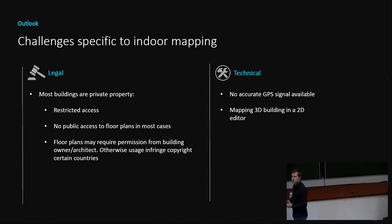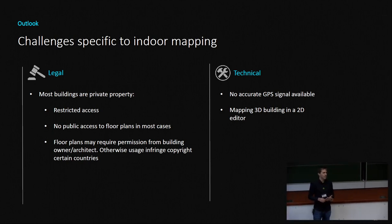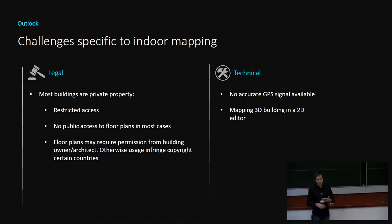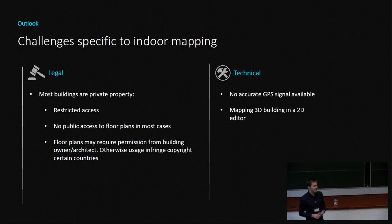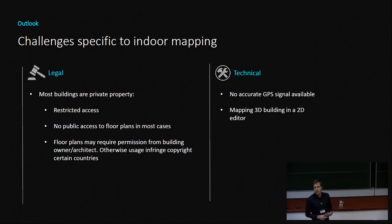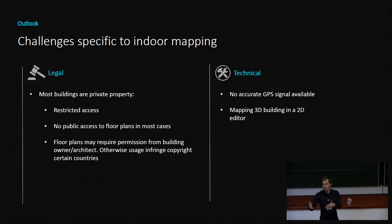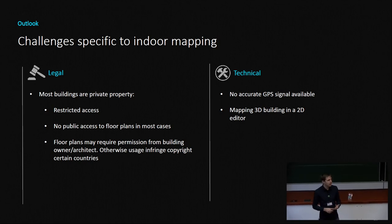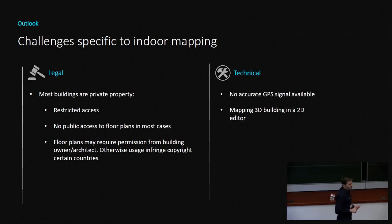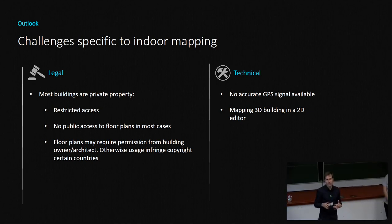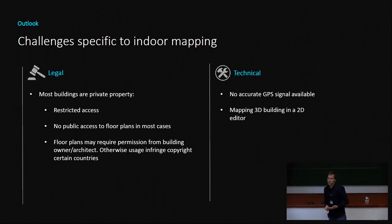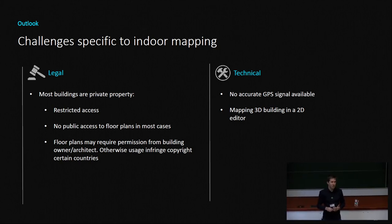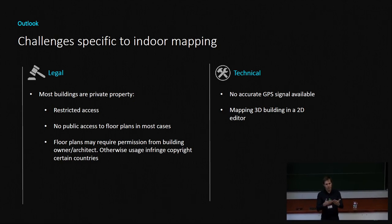There are some challenges specific to indoor mapping that you don't face outdoors. Most buildings are private, meaning you have restricted access — you can't just go into any building and do the mapping. It's also hard to get floor plans because in many countries, like Germany, there is copyright on them, so you need the permission of the owner or architect. Technically, indoors you lose GPS signal, so you can't record traces the way you can outdoors. And you have to map three-dimensionally using a two-dimensional view, which requires a bit more imagination.